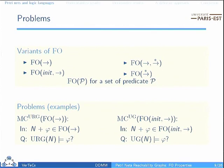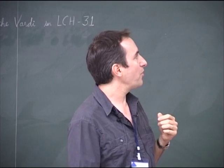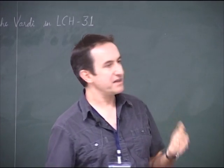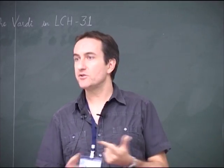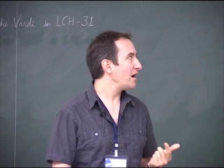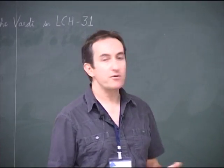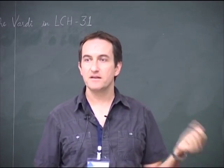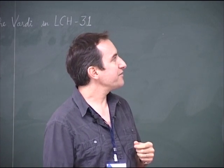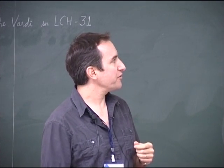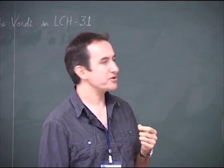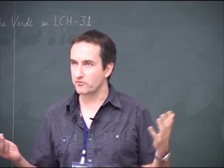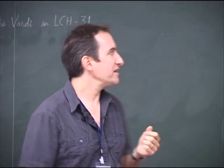These are the kinds of problems we try to solve — it's more or less model checking. We take a net and a formula, and we try to check whether the net satisfies the formula, either with the reachable graph structure or the universal graph structure.